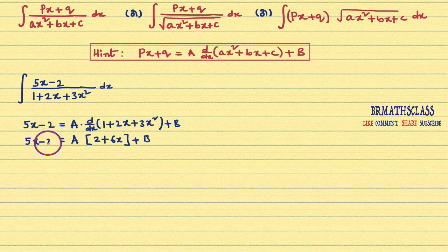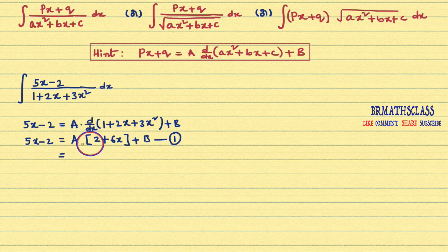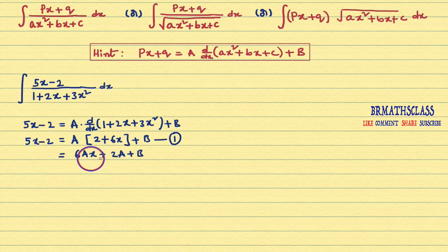So 5x minus 2 equals a into (2 plus 6x) plus b. Our first target is to find the values of a and b. I will multiply through by a, giving 2a plus 6ax plus b. You can observe that the x coefficient is 6a and the constant part is 2a plus b.